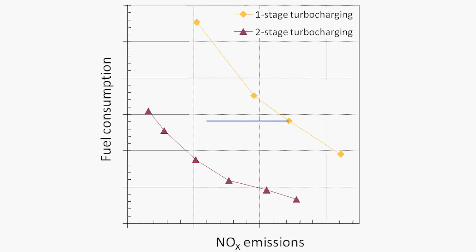This enables either the lowering of nitrous oxide emissions or an even further reduction of fuel consumption. Altogether, two-stage turbocharging allows for fuel savings of up to 5% without any performance loss.